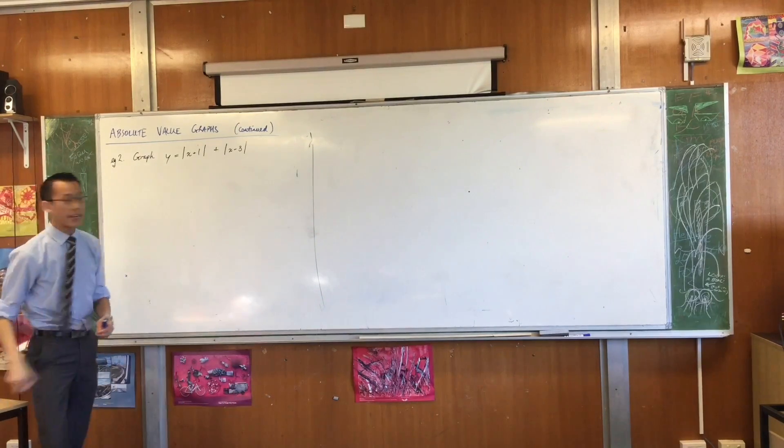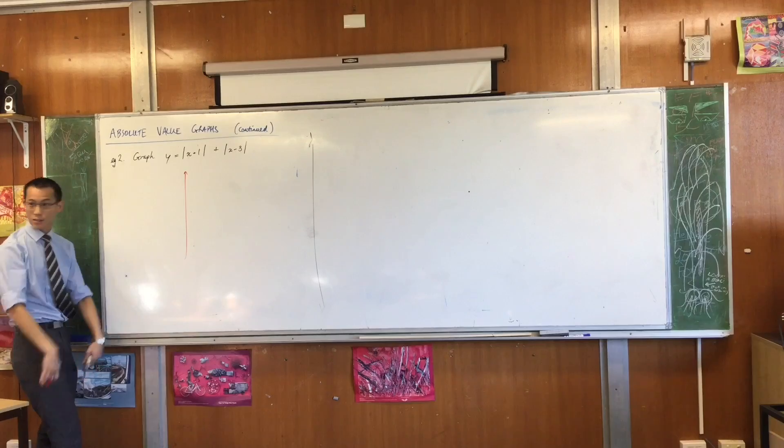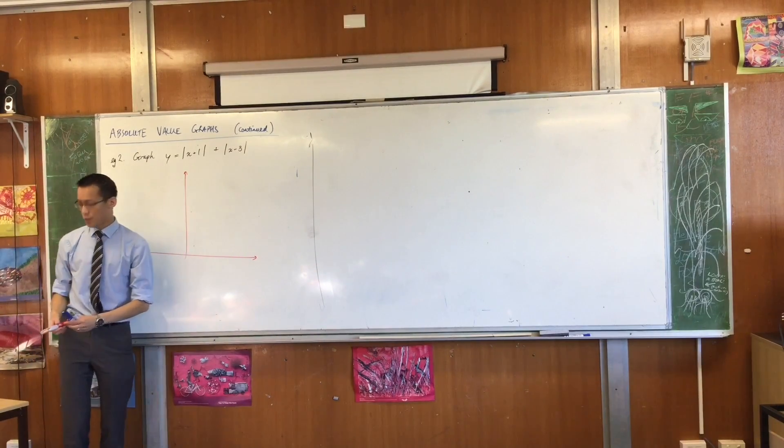So again, draw yourself a set of axes. Let's draw this all positive because all you've got on the right-hand side is all absolute values, so everything's going to be positive. And we're going to draw these things.